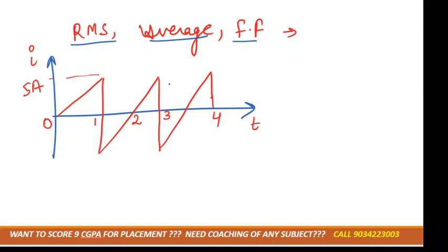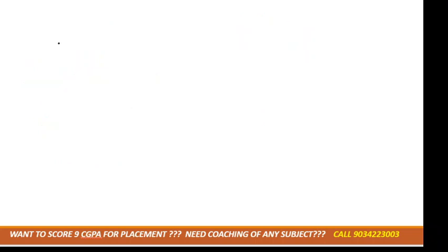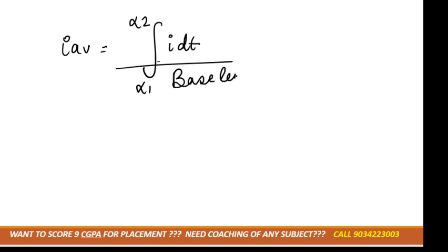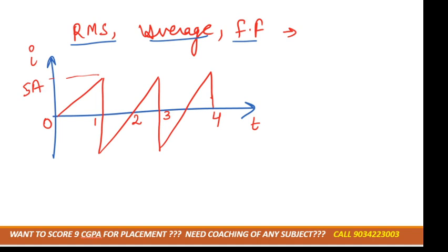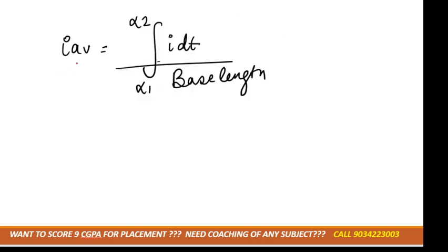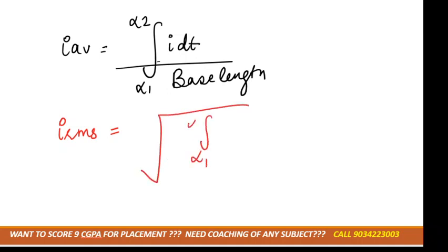They can also ask for the peak factor. As you can see, this is a similar waveform. For the average value, the formula is: I_average equals the integration from α₁ to α₂ of i dt, divided by the base length. In this question, it is given in terms of current. Similarly for voltage, if voltage is given, use the same formula with voltage. For I_rms, the formula is the square root of the integration from α₁ to α₂ of i² dt, divided by the base length.